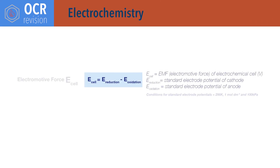For electrochemistry. E-cell equals E-reduction minus E-oxidation, where E-cell is the electromotive force or EMF of an electrochemical cell. E-reduction is the standard electrode potential for the cathode of the cell, and E-oxidation is the standard electrode potential for the anode of the cell. Conditions for standard electrode potentials are 298 kelvin, 1 mole per decimetre cubed concentration, and 100 kPa of pressure.